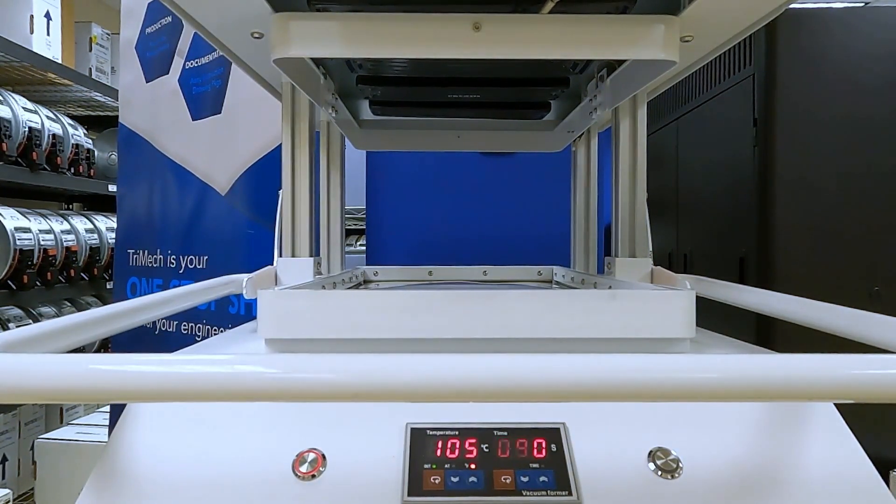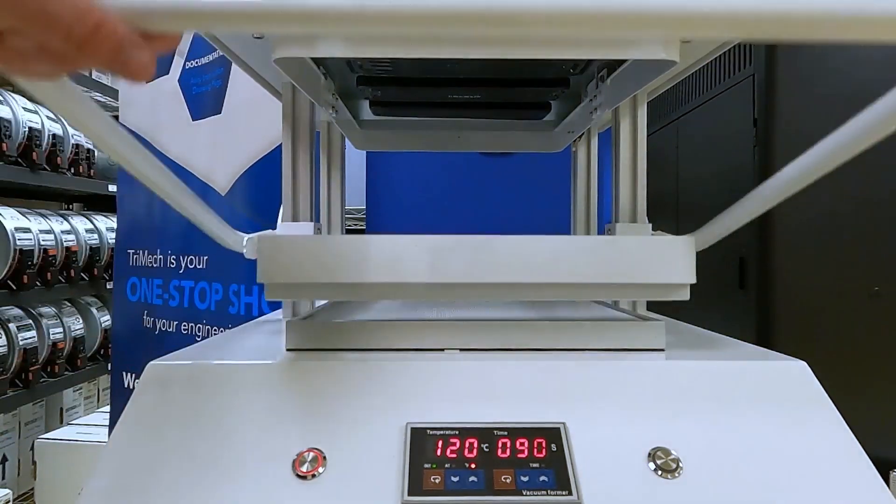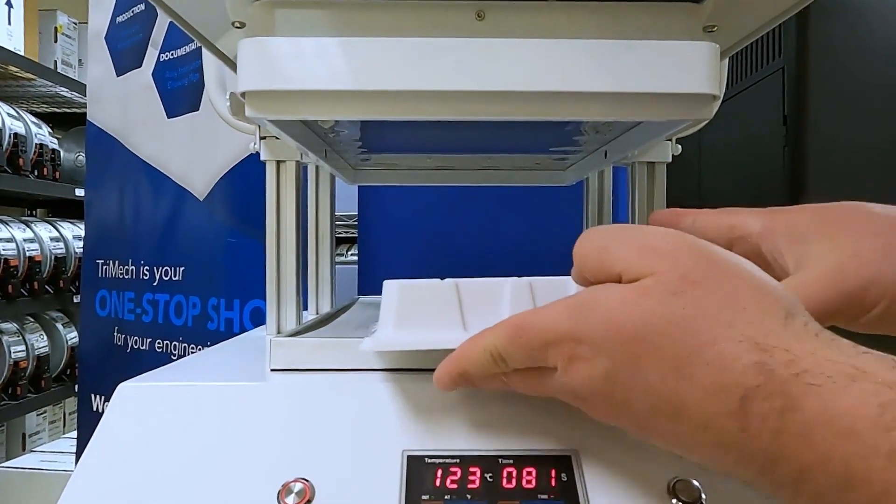So next, I'm going to put this thermoform sheet into the machine, and once it hits temperature, we're going to raise that up, and then we're going to slide our polycarbonate thermoform mold into the system itself.